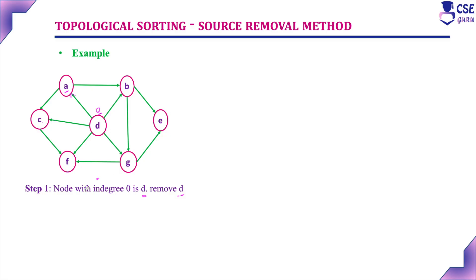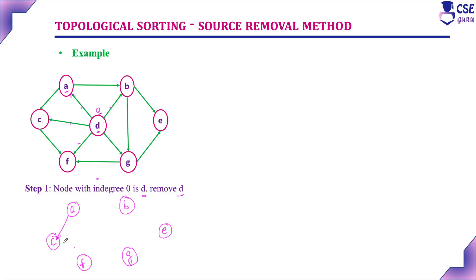Remove D from the graph. When removing D, its edges must also be removed. The resultant graph will contain vertices A, B, C, F, G, and E along with their remaining edges. Only vertex D and its edges are removed from the graph. This will be the resultant graph.